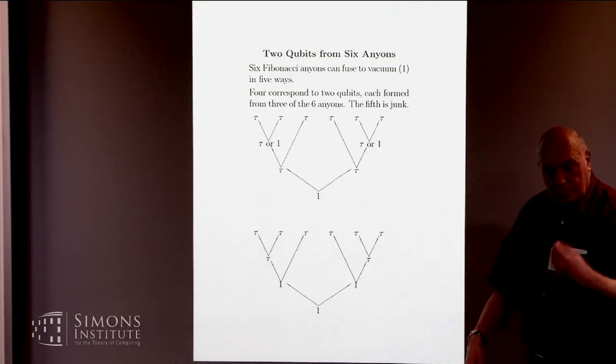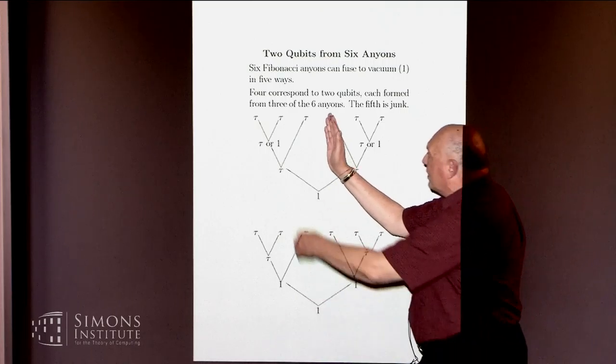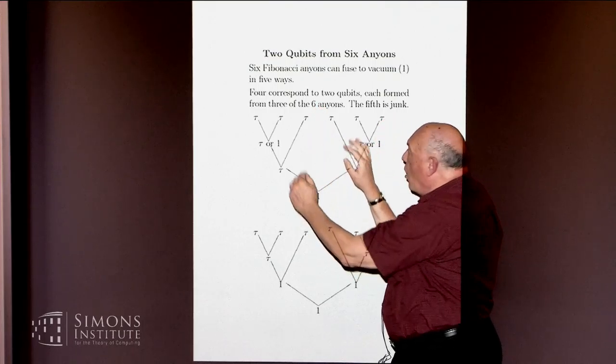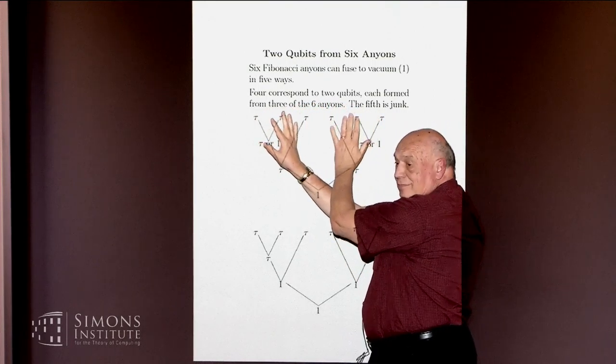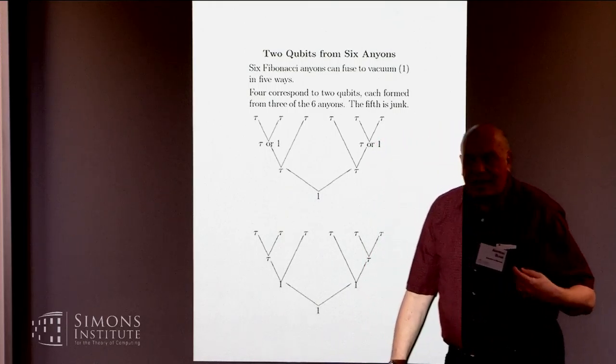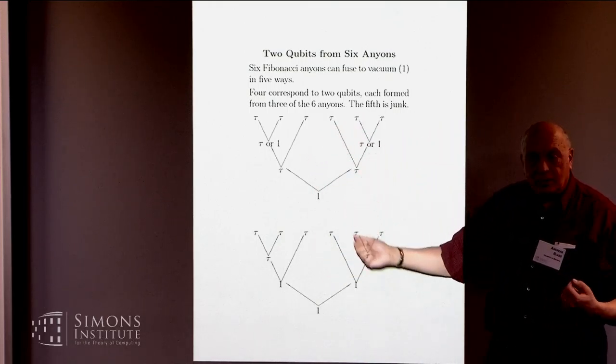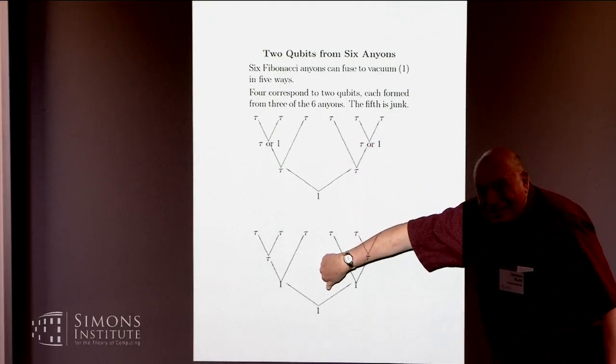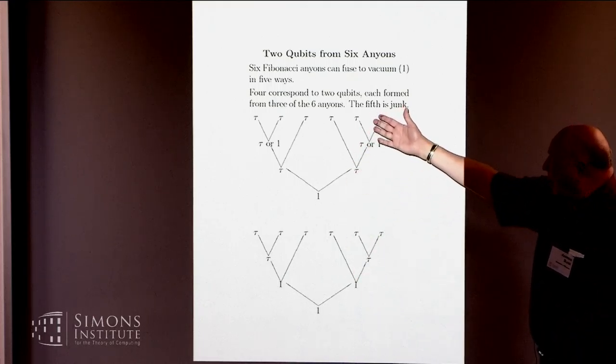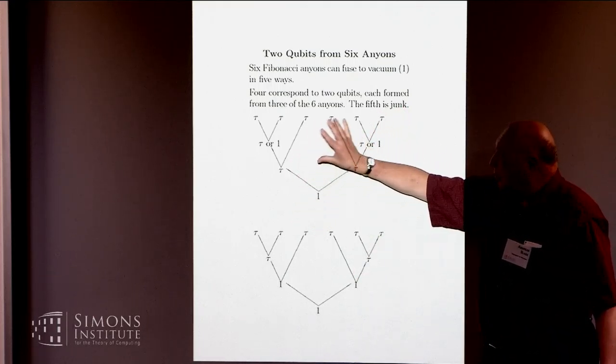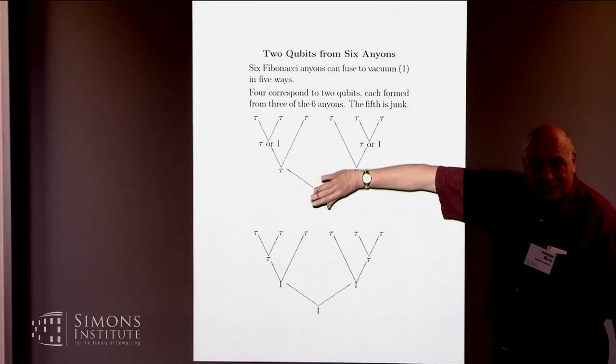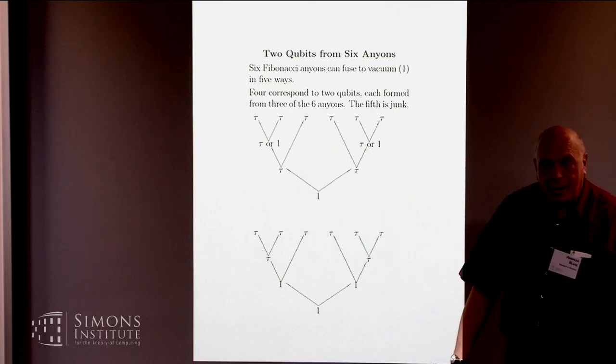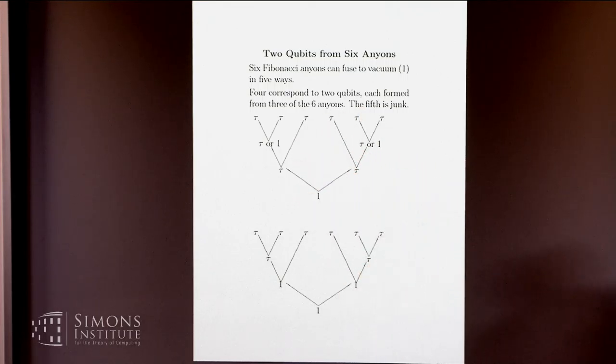What I would like is to be able to do braid group operations, some complicated braiding steps that will map this subspace into itself so that I'm actually able to do computations with those two qubits without worrying about those. Now, there are braid operations that will do this. For one thing, if I do any braiding I want on just these three, or on just these three, or if I just pick up these three and move them all past that. But none of those get me really anything that combines the two qubits.